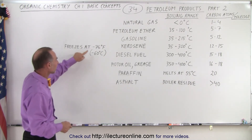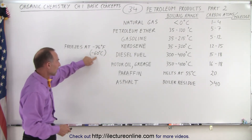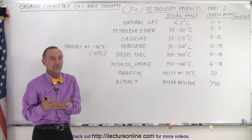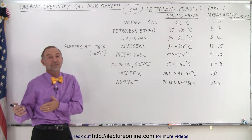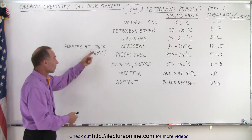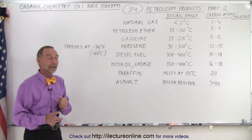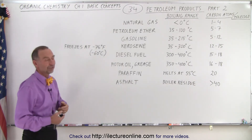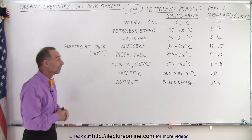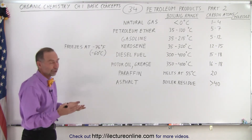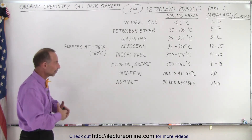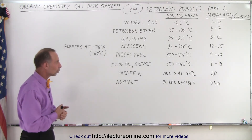Kerosene will freeze at minus 76 degrees Fahrenheit, which is about minus 60 degrees Celsius. That's one of the reasons why you can't fly to the Antarctic in wintertime — if temperatures drop well below that, your fuel will begin to freeze and your plane can't take off again. There are also other mechanical failures that occur at such extremely cold temperatures.